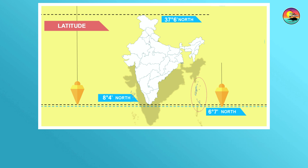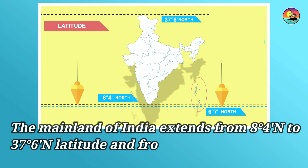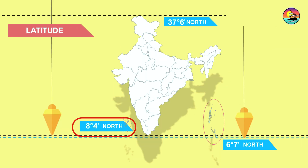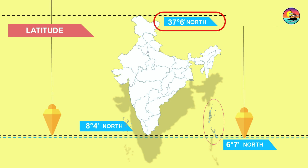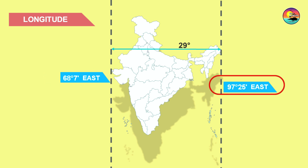For example, the mainland of India extends from 8 degrees 4 minutes north to 37 degrees 6 minutes north latitude, and 67 degrees east to 97 degrees 25 minutes east longitude.